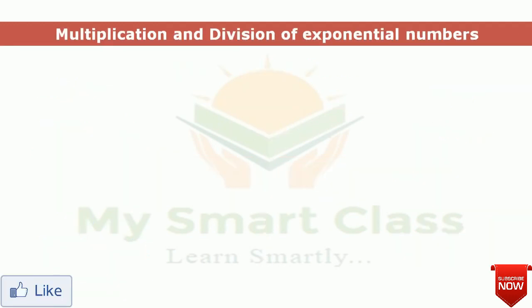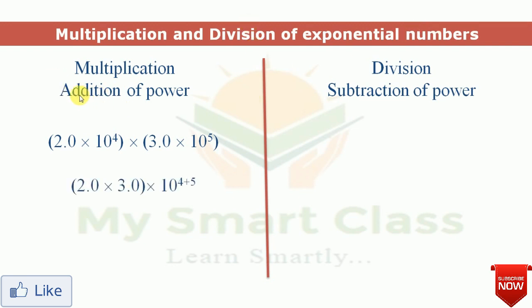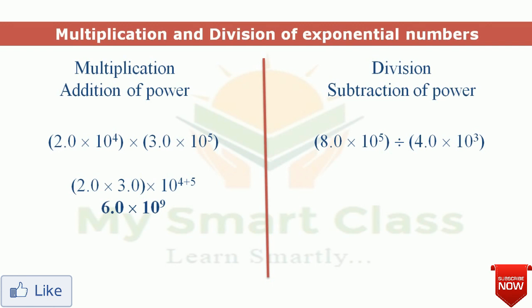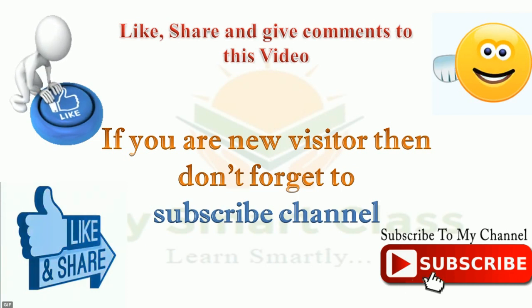Multiplication and division of exponential numbers is simpler than addition and subtraction. For multiplication: 2.0 × 10⁴ multiplied by 3.0 × 10⁵ — multiply the coefficients (2 × 3 = 6) and add the powers (4 + 5 = 9), giving 6.0 × 10⁹. For division: 8.0 × 10⁵ divided by 4.0 × 10³ — divide the coefficients (8 ÷ 4 = 2) and subtract the powers (5 − 3 = 2), giving 2.0 × 10².